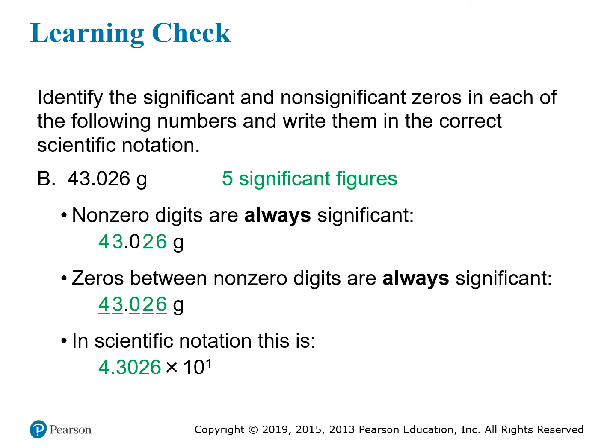For the next example, the number is 43.026. In this case, there are no leading or trailing zeros to worry about. All we have are non-zero digits and a zero in between them. That means every digit is significant, and they all go into the coefficient. You place the decimal after the first digit and figure out how many places you had to move it — one place. Since the number was originally greater than 10, that means it's a positive one in the exponent. So in scientific notation, this is 4.3026 times 10 to the 1st power.